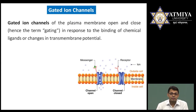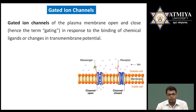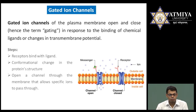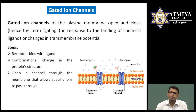Now let us look at gated ion channels in detail. Gated ion channels are present on the plasma membrane; they may open or close depending on the situation. When messengers are not present the channel is closed, but once a messenger binds the channel opens. There are three steps: step one — ligand binds to receptor; step two — conformational changes occur in the receptor; step three — ions are able to cross through the ion channel.